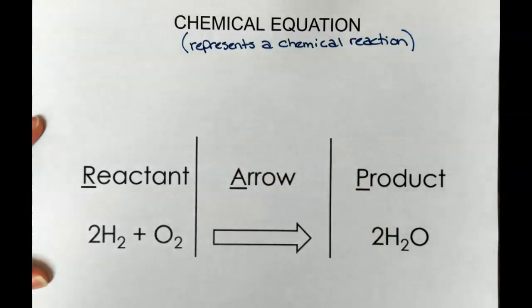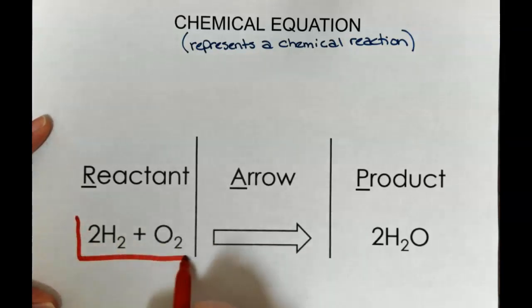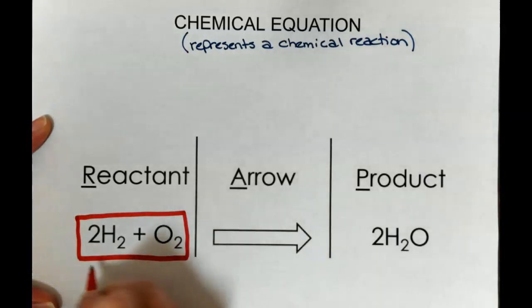Now there are two parts to the chemical equation. We have reactants and we have products. So if we look at our chemical equation, anything to the left of the arrow is what we call a reactant. The reactant just means what you start with. This is how we start our reaction.